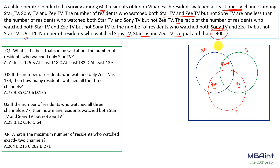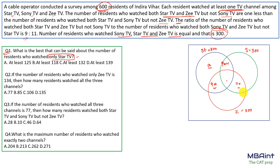Each circle sum equals 300 and total residents surveyed is 600. For optimization, we use two standard equations. Let A, B, C represent the exactly-one regions (only Star TV, only Sony TV, only Zee TV), and let K be the exactly-three region (all three channels). The exactly-two region sums to 29x+1. Equation 1: (A+B+C) + (29x+1) + K = 600. Equation 2: (A+B+C) + 2(29x+1) + 3K = 900.